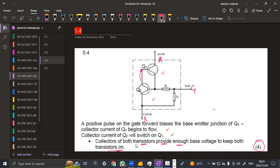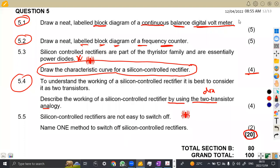So that's the operation of a silicon-controlled rectifier, where we are referring to it as a two-transistor analog. So that's how you can describe this using the two-transistor terminology, two-transistor analog.